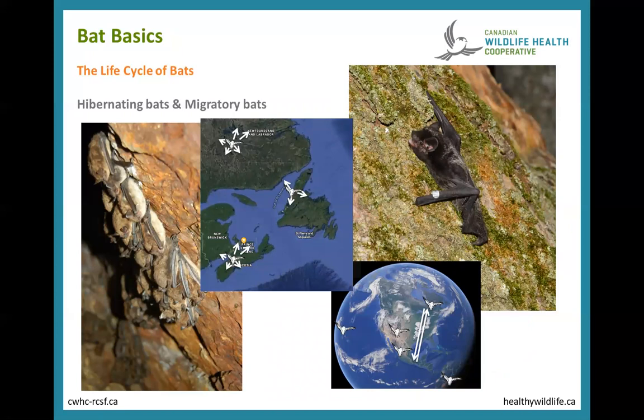In Canada we have about 16 to 17 bat species. In Atlantic Canada we have seven bat species. We can divide these into two groups based on how they deal with the absence of insects in winter: hibernating bats and migratory bats. Let's talk about these different strategies and what they mean for where bats are found.